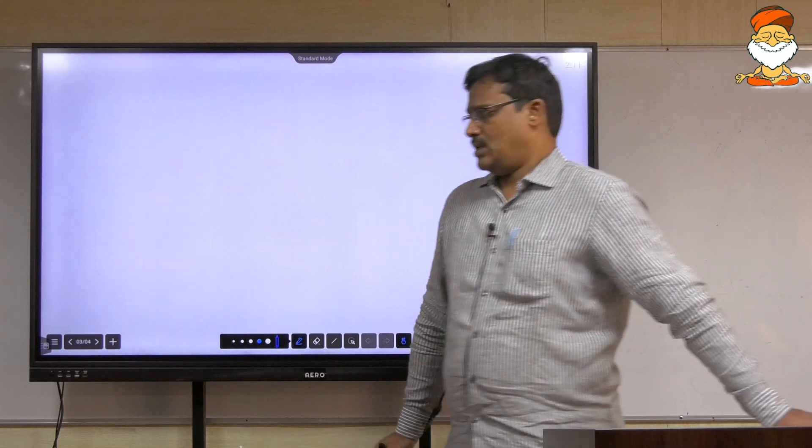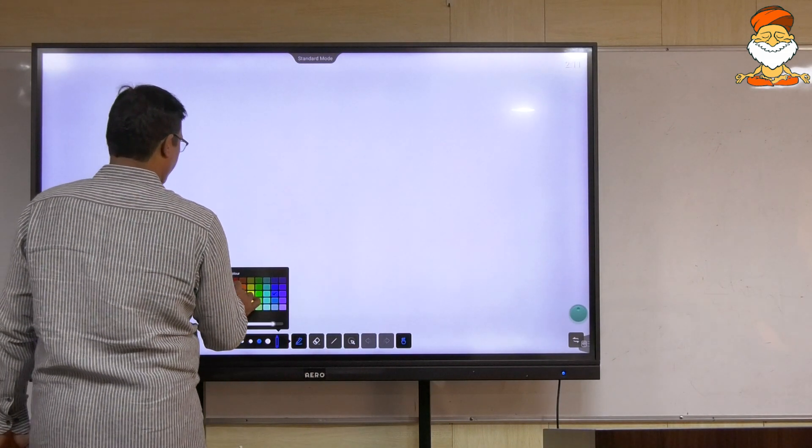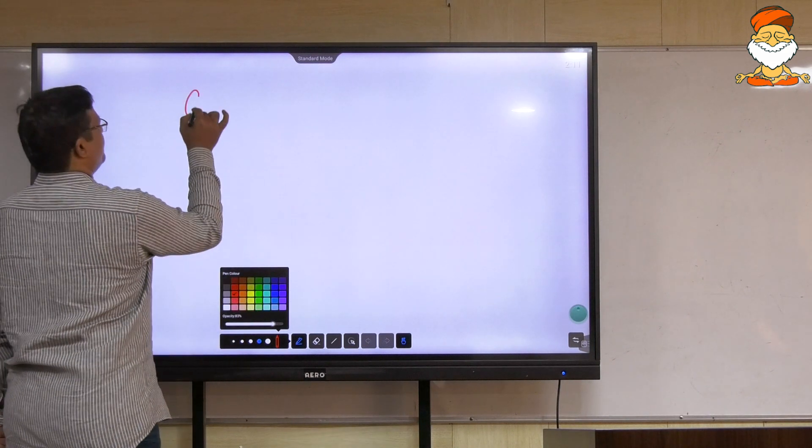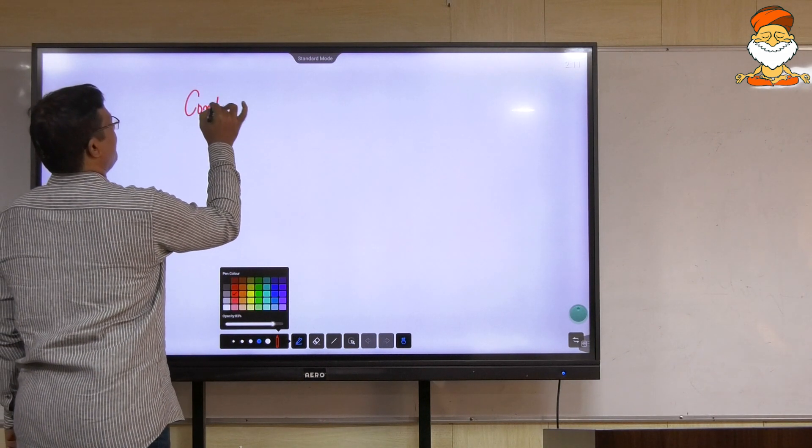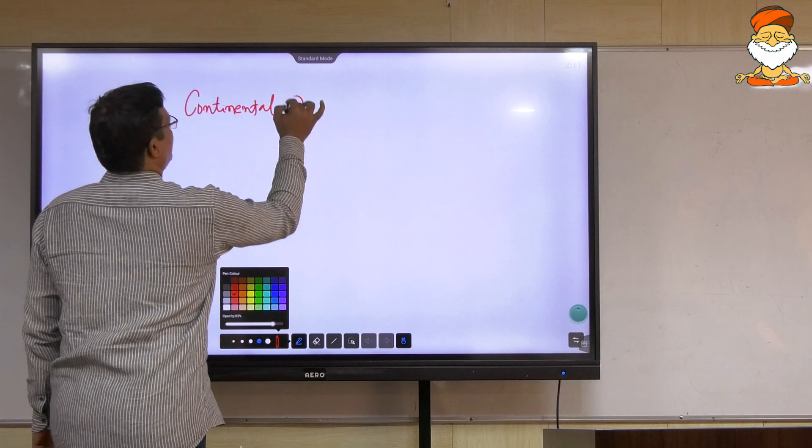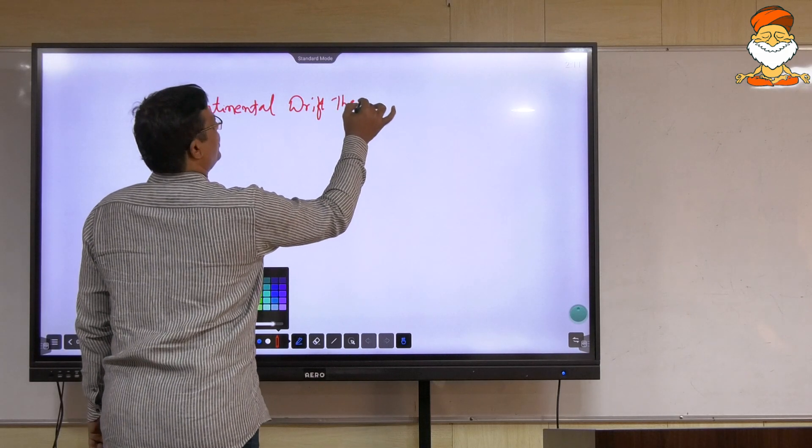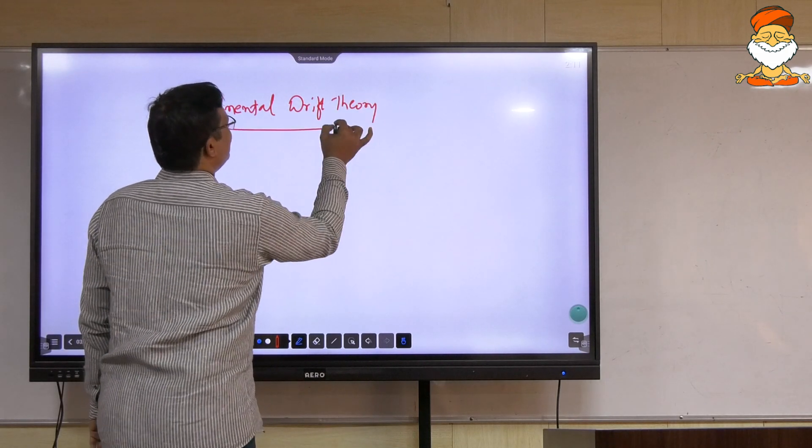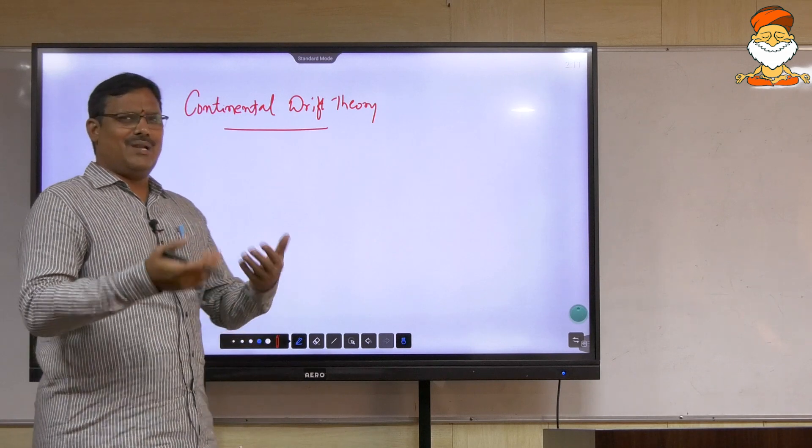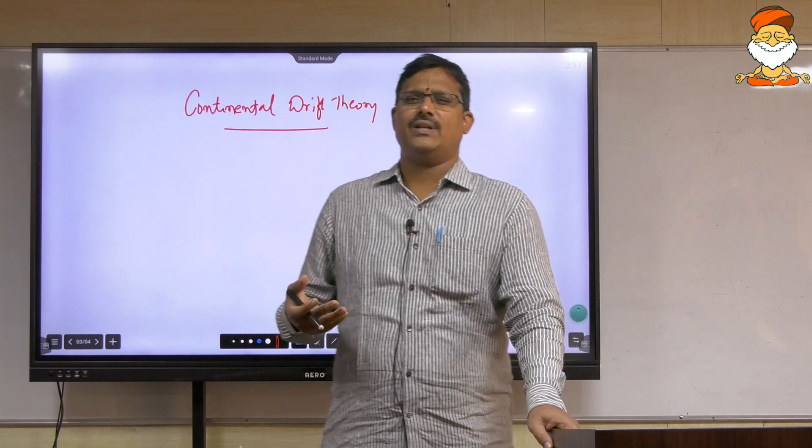Students, today's topic of discussion for us is going to be Continental Drift Theory. This was propounded by Alfred Wegener. Before we talk about the theory, let's try to understand a little bit of its backdrop that how the theory actually got evolved.